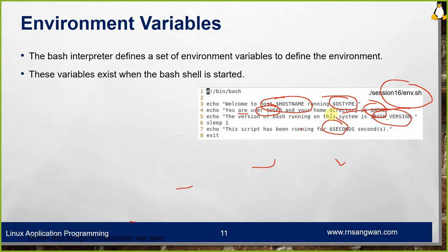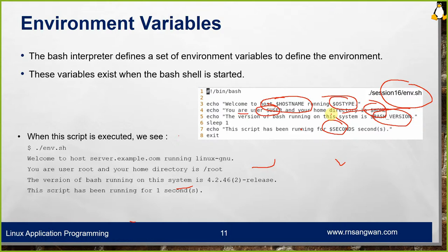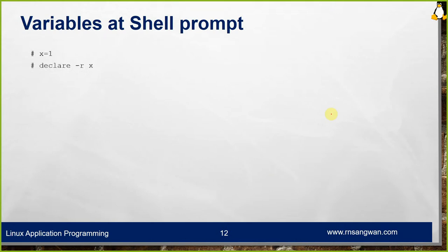Keep pen and paper ready for programs I will assign. When the shell script is executed you will see a message like: welcome to host server.example.com running Linux GNU; you are user root and your home directory is /root; the version of bash running is 4.2 release; and the script has been running for more than 1 second. Variables can be used at the shell prompt as well.